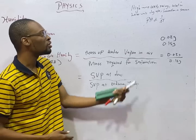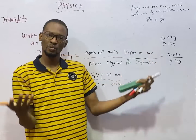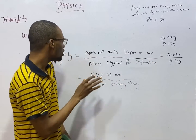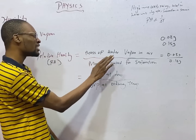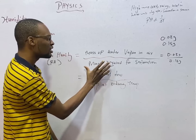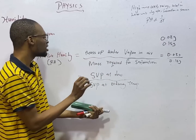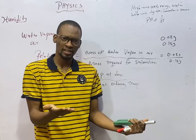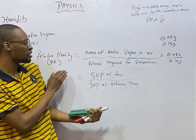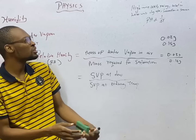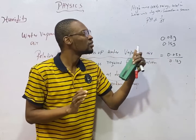Once you have more water vapor, you can have wet season, rainy season, and winter. By the time the mass of water vapor in air is lower than the mass required for saturation, it means the air still needs water — the air is still dry. The result of low humidity would be dry atmosphere, harmattan, or summer.